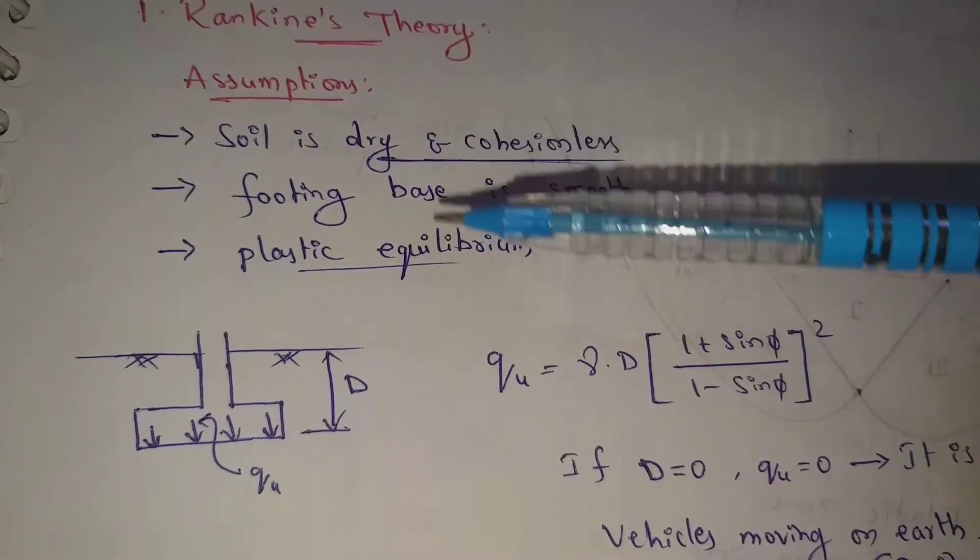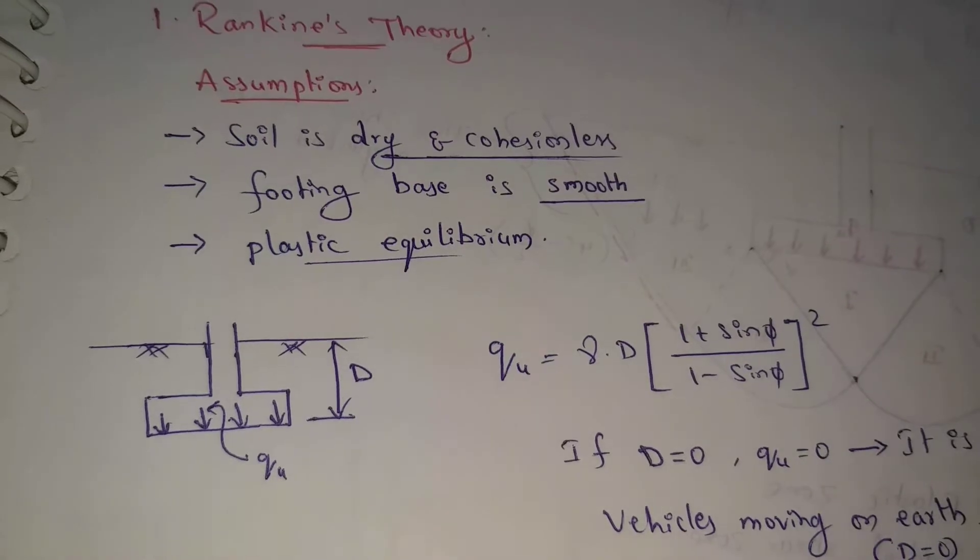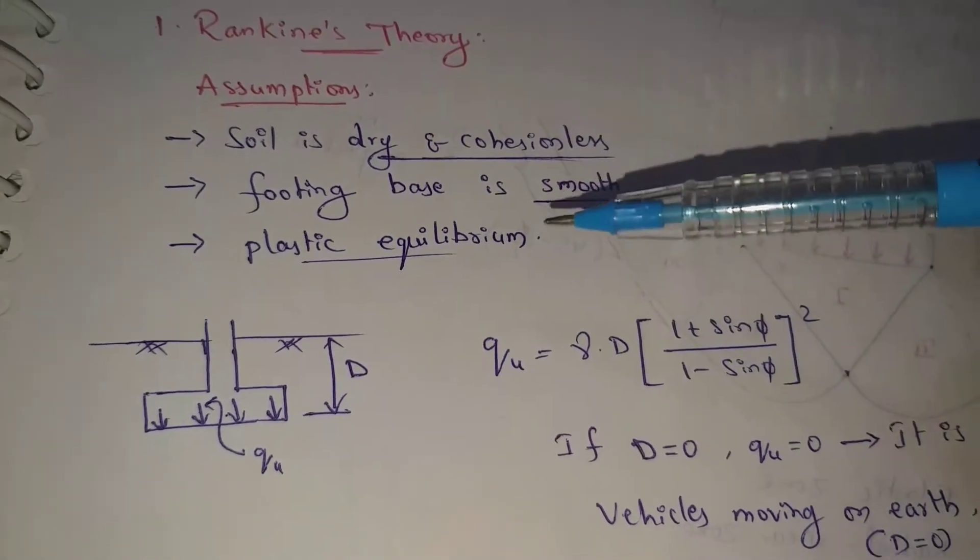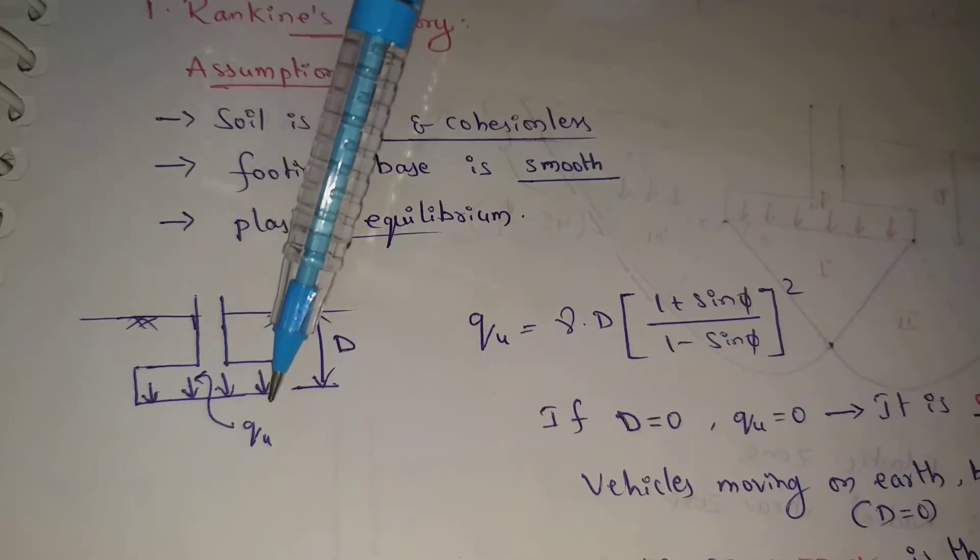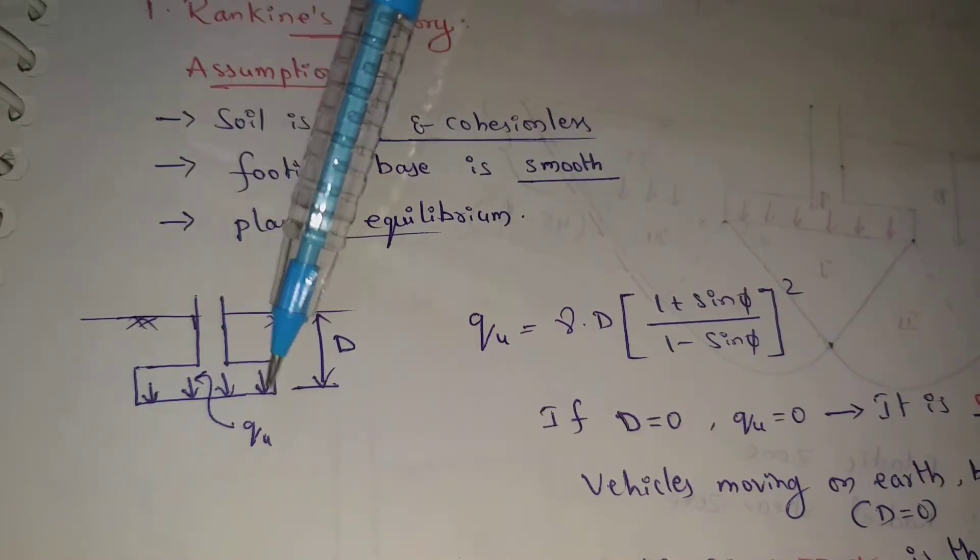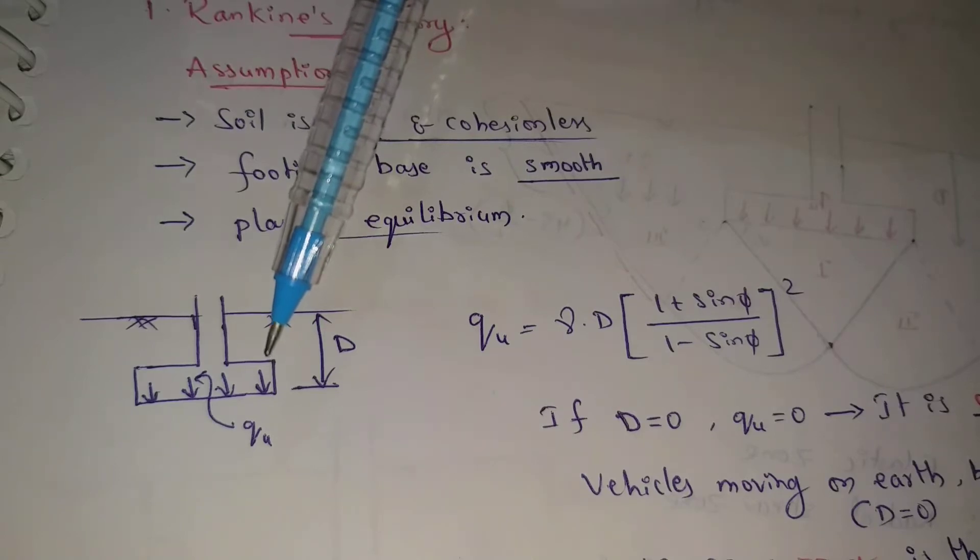If we show this soil, the plastic equilibrium condition, the assumptions. If we show this footing, the footing has some intensity of loading. That is QU, ultimate bearing capacity of soil.